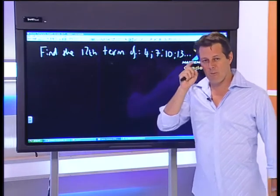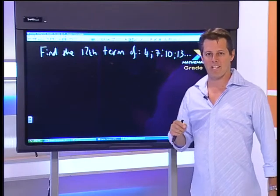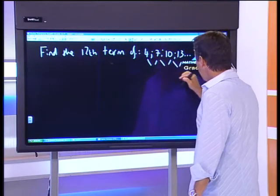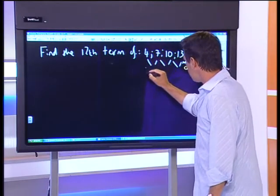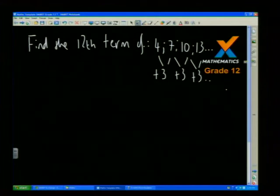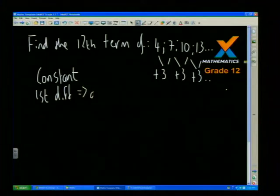I just want to remind all of you at home: the constant first difference is always going to be arithmetic. If I look in between each of these terms and say how am I going from one term to the next, you should see I'm going up plus 3, plus 3, plus 3. So we know we have an arithmetic sequence — arithmetic tells us we have a constant first difference. That constant first difference, which is my d, is equal to 3.